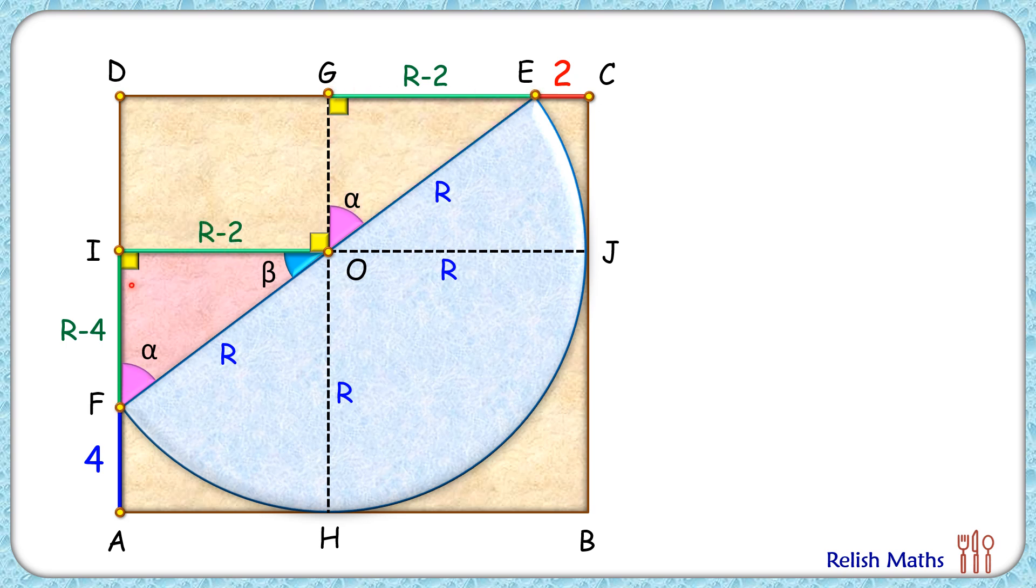Now in triangle FIO, applying Pythagoras theorem we get this equation. Applying the (a-b)² formula to both terms and simplifying, we get this quadratic equation. The r² terms on both sides cancel, giving us r² - 12r + 20 = 0.